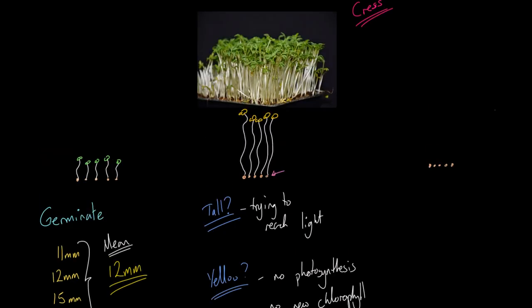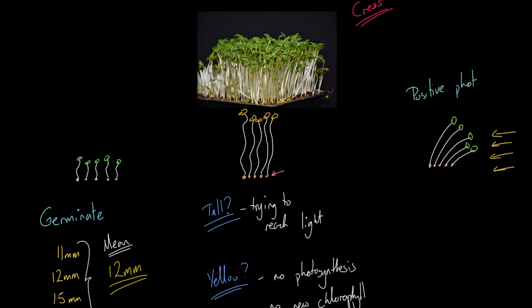Probably one of the other setups you'll do is one where you've got light coming from one side, so you can show some nice effects of positive phototropism. The plants will grow pointing their leaves over towards the light, demonstrating positive phototropism.